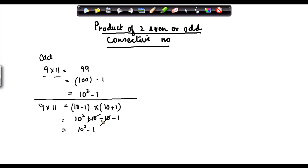Now let us try the same thing with an even number. Suppose I multiply 10 by 12, this is equal to 120. Now 120 can also be written as 121 minus 1. 121 I know is 11 times 11, so I can write this as 11 square minus 1.